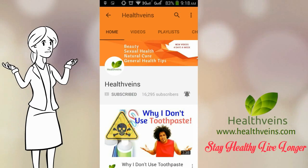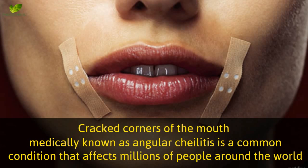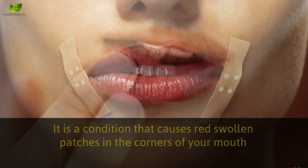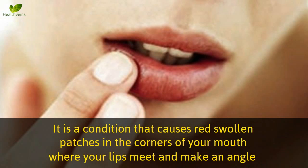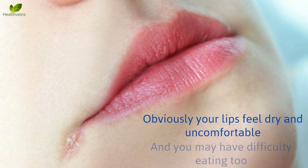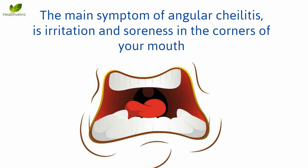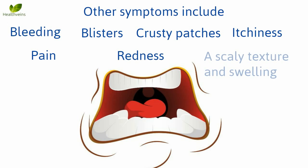Cracked corners of the mouth, medically known as angular cheilitis, is a common condition that affects millions of people around the world. It causes red swollen patches in the corners of your mouth where your lips meet and make an angle. Your lips feel dry and uncomfortable and you may have difficulty eating. The main symptom of angular cheilitis is irritation and soreness in the corners of your mouth.